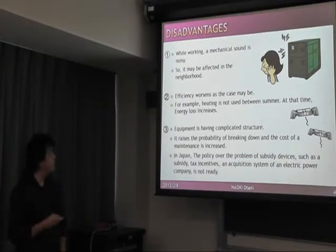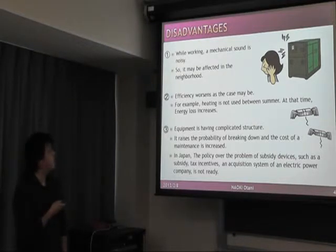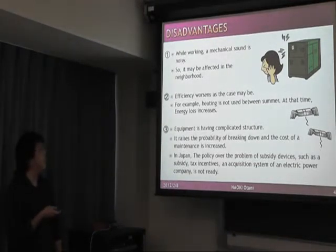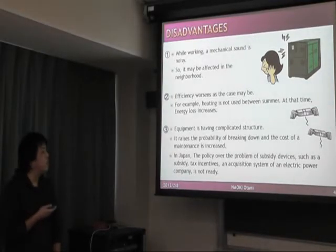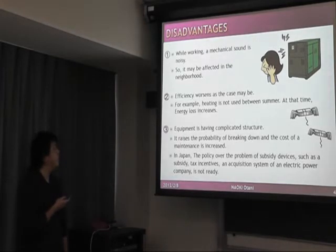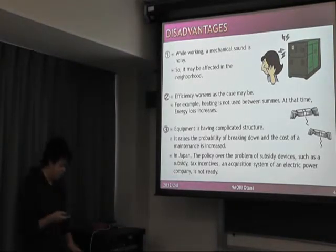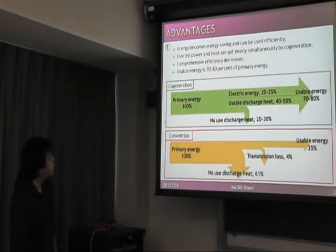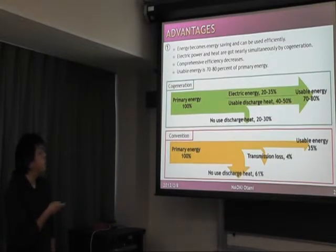The second disadvantage is efficiency. Efficiency may drop depending on the case. For example, heating is not used during summer. At that time, energy loss increases, and efficiency drops 40 to 50%.